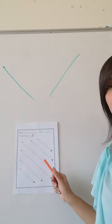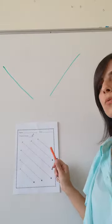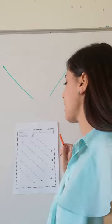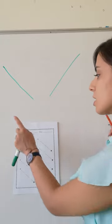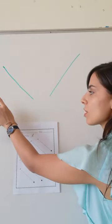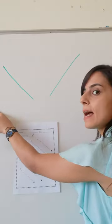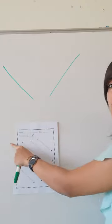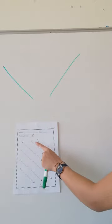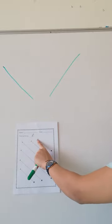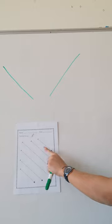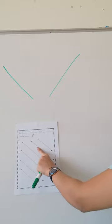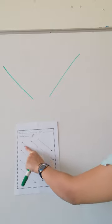On the second worksheet, we have a diagonal line that starts from the top left to the bottom. Look here — it starts from the top left to the bottom. This is a diagonal line.